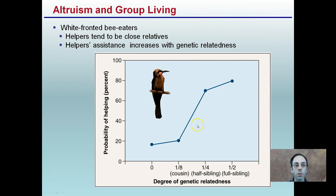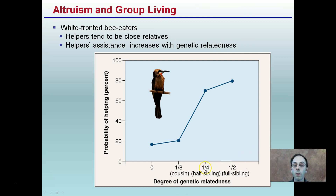This graph shows that helpers tend to be close relatives — helper assistance increases with genetic relatedness. The probability of helping increases as the degree of relatedness increases, so the closer they are related, the more likely they are to help. You can relate this to everyday life: if you're moving or need to be picked up from the airport, you're more likely to ask a full sibling or half sibling than a cousin or someone more distantly related to you.